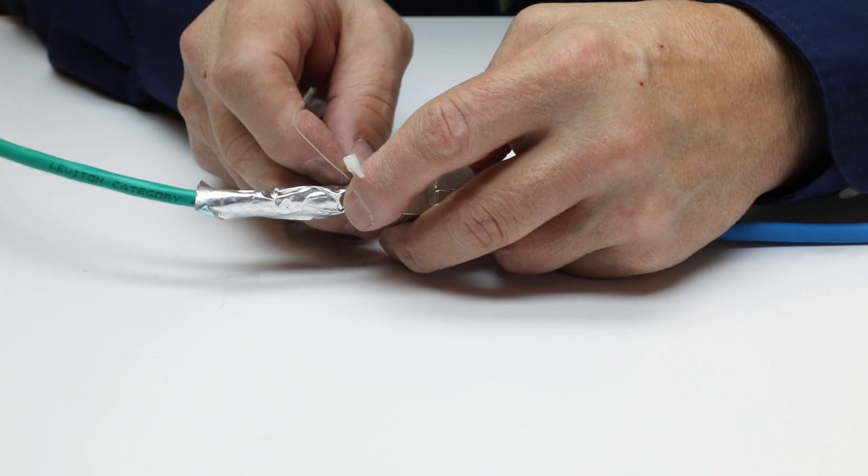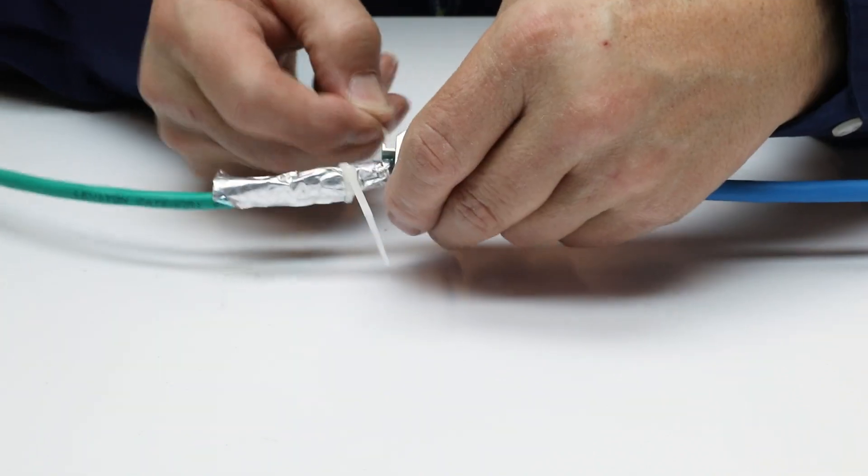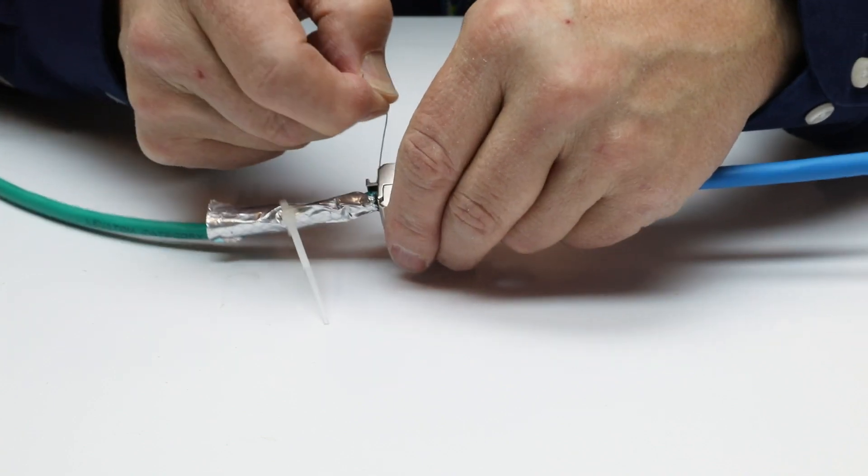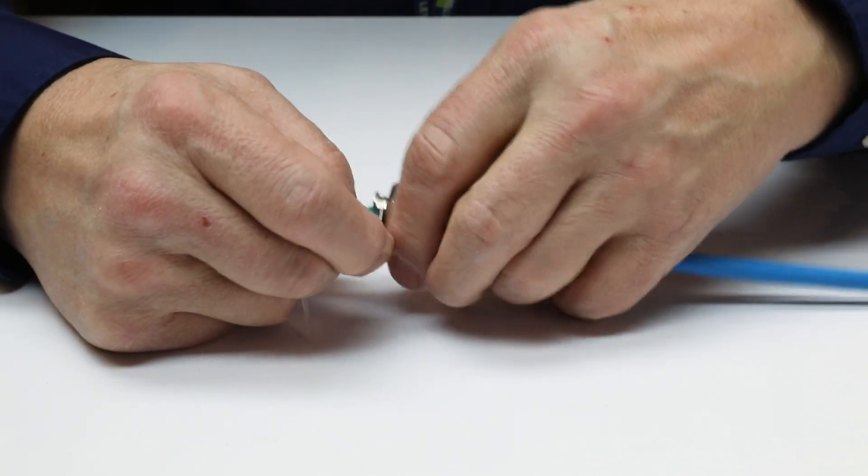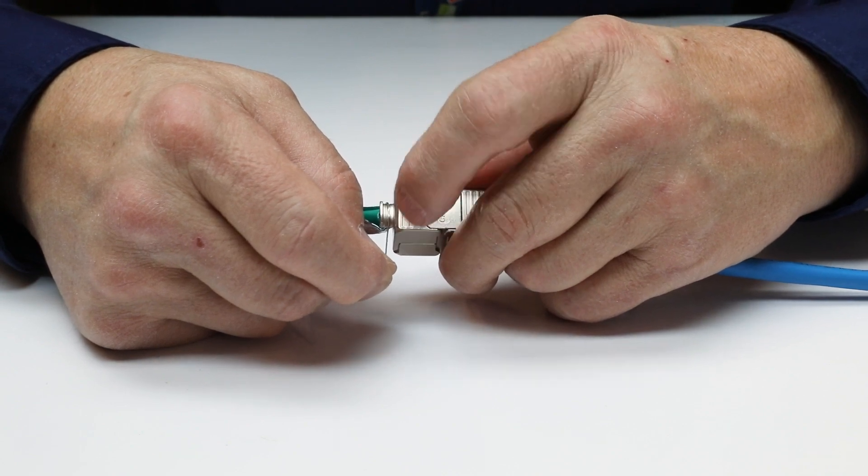Loosely cinch one of the included cable ties around the cable near the device rear stanchion. Wrap the full three inches of drain wire around the stanchion, making sure that the drain wire sits in the stanchion grooves. At least two full wraps of the drain wire should be achieved.